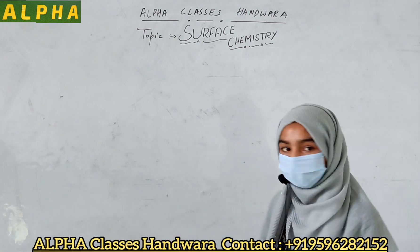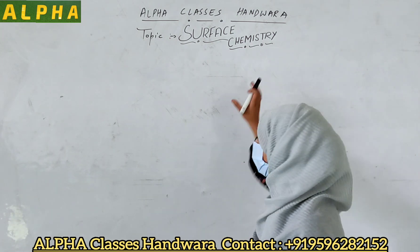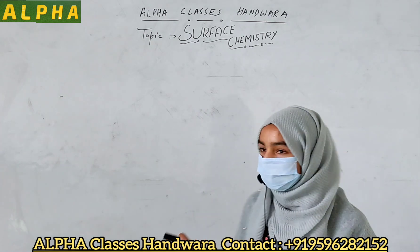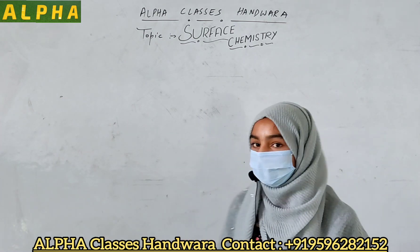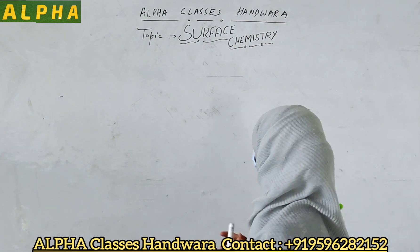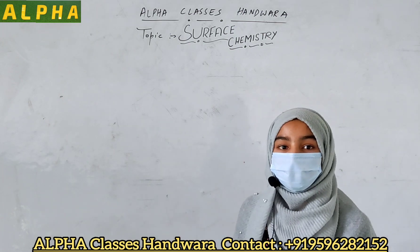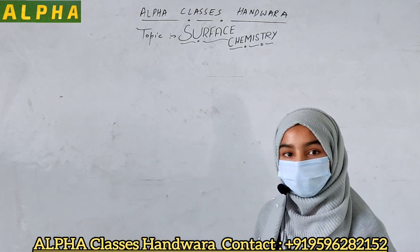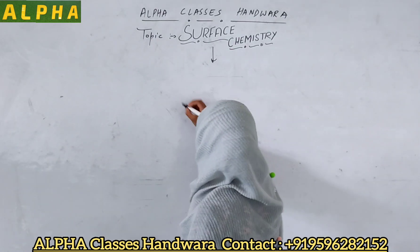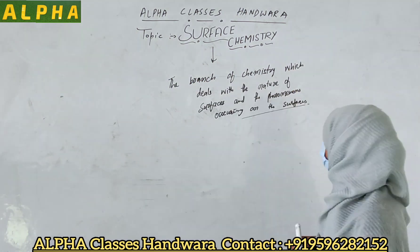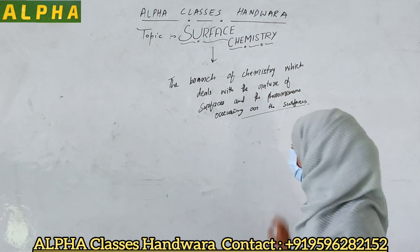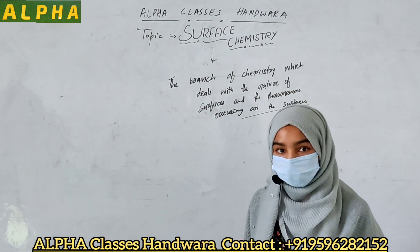Before starting adsorption, let me tell you what is surface chemistry. I know you are thinking that surface chemistry must be the chemistry related to the surfaces — yes, you are right. Surface chemistry is the branch of chemistry which deals with the nature of surfaces and the phenomena occurring on the surfaces.